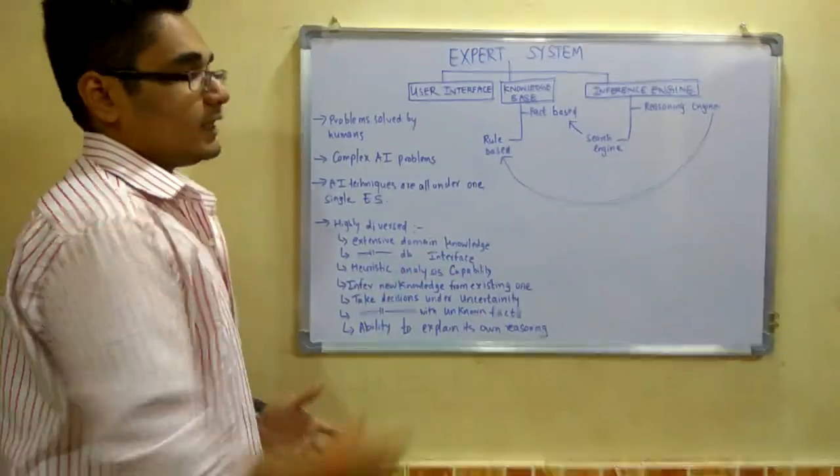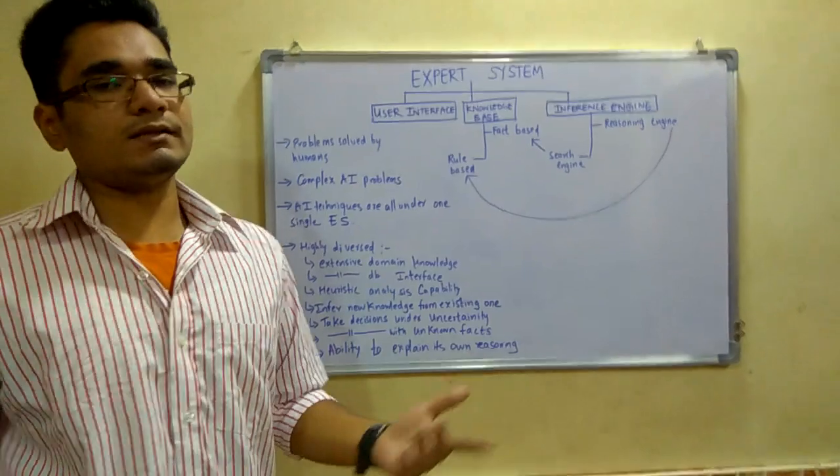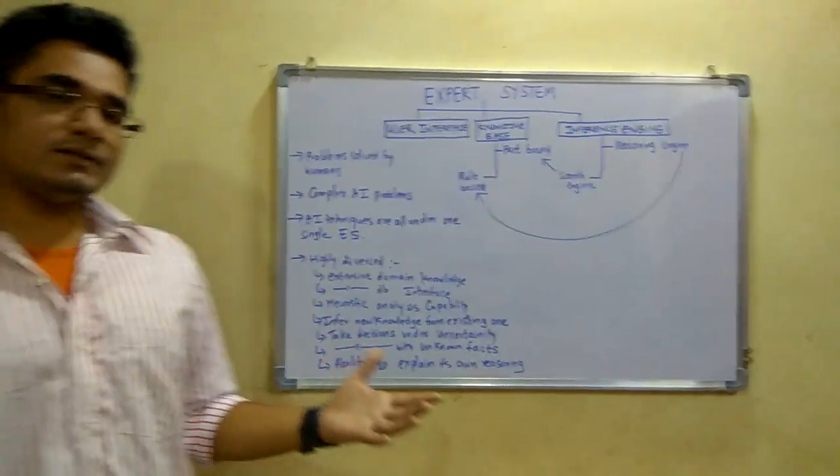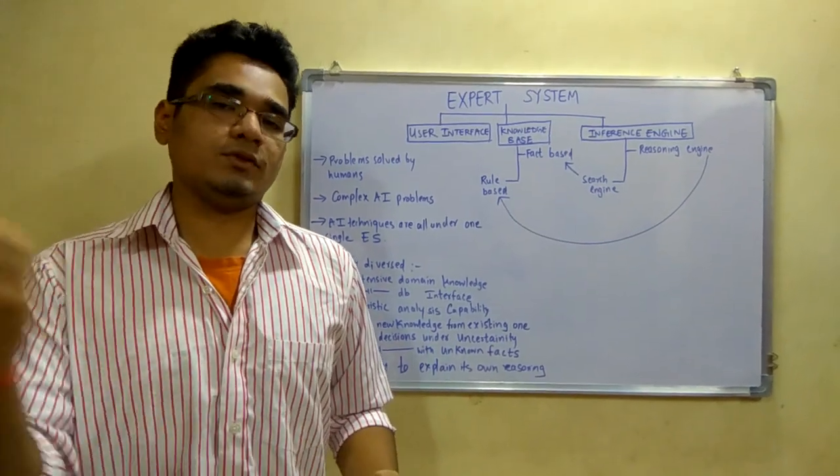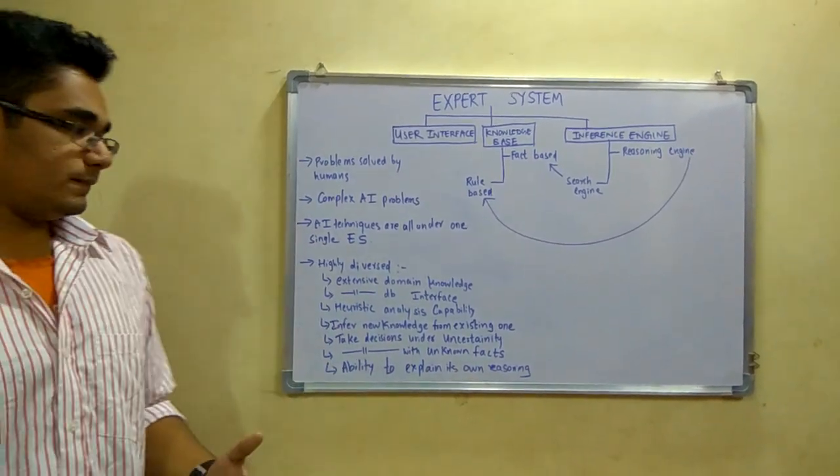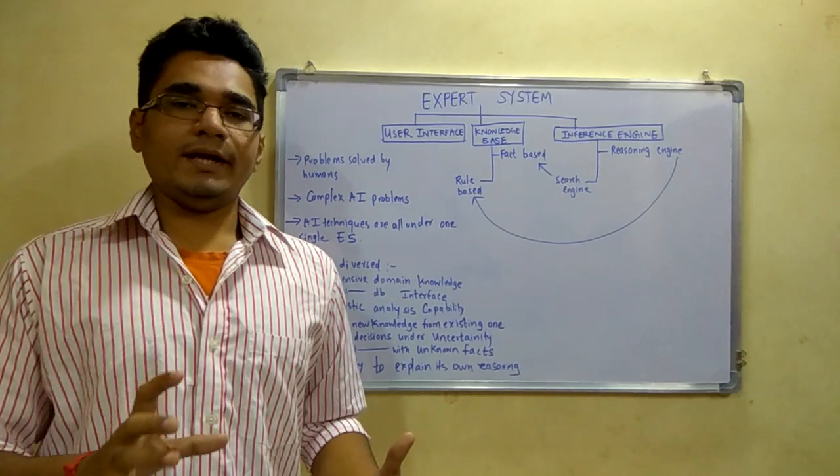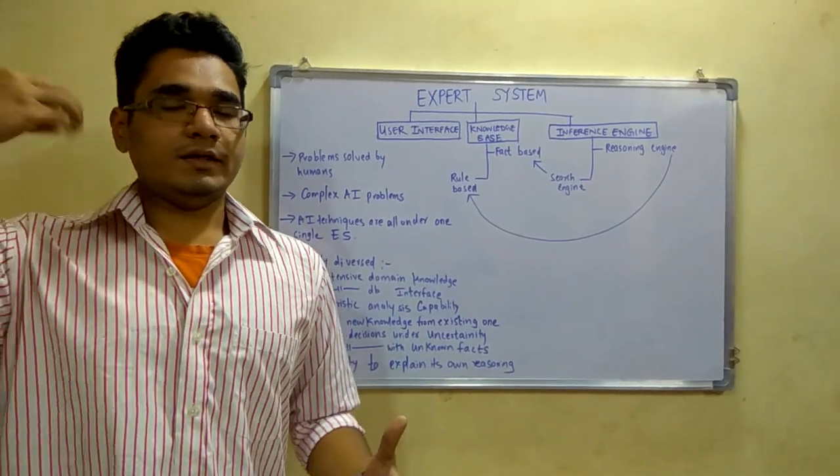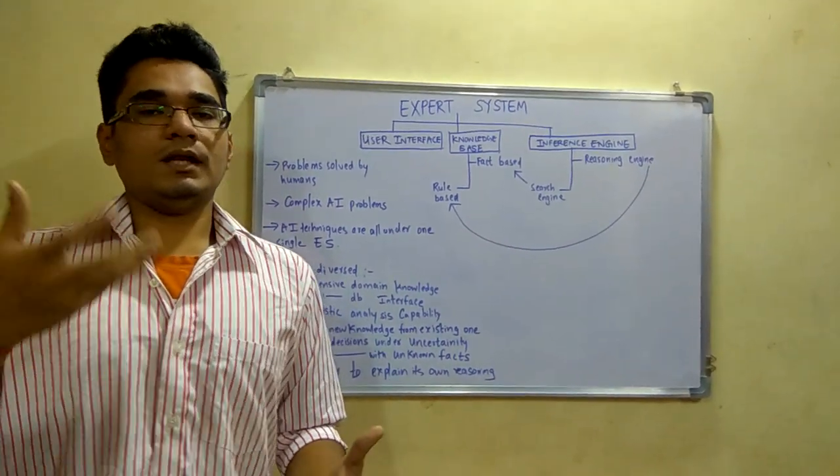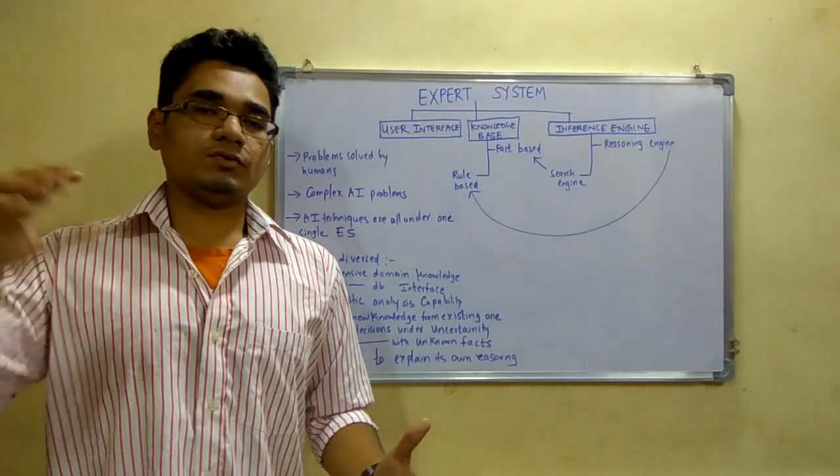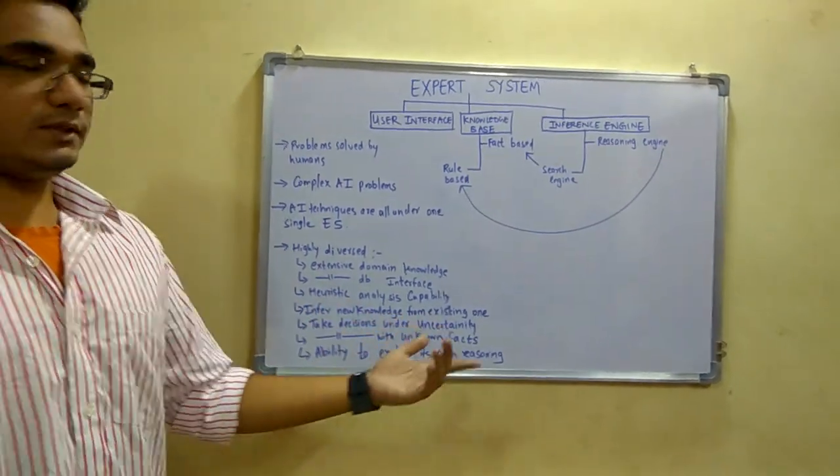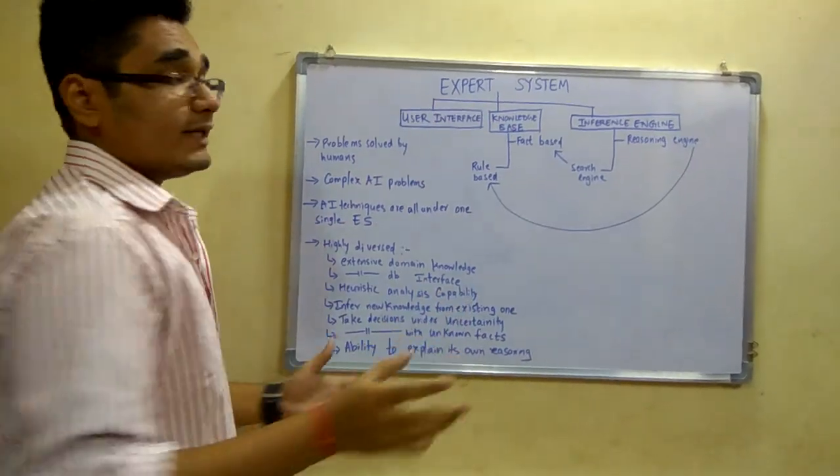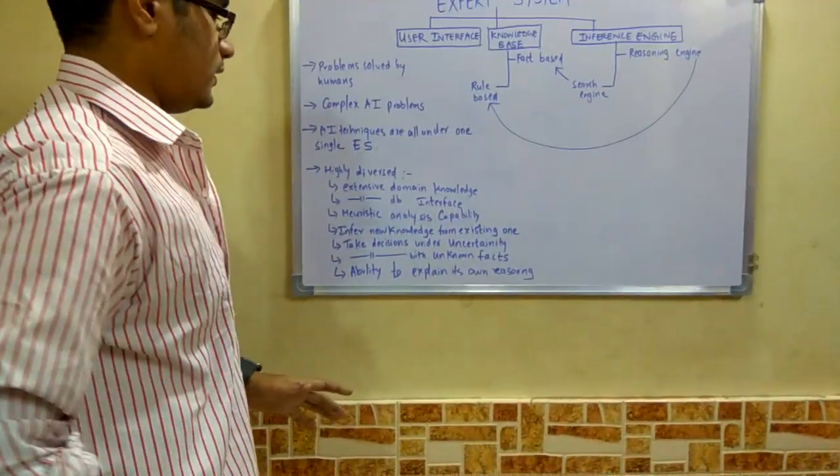Next is heuristic analysis capability. Heuristic basically means to get the reason of why I am solving this problem. Expert systems provide the reasons and layouts of how they think to solve and what is their approach to solving the problem. So expert systems have that capability to provide heuristic analysis.